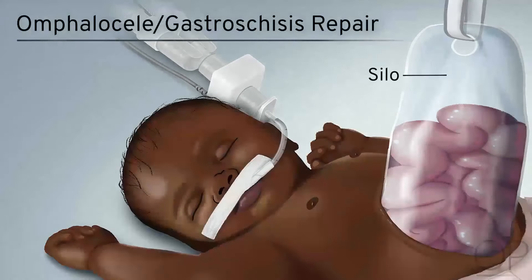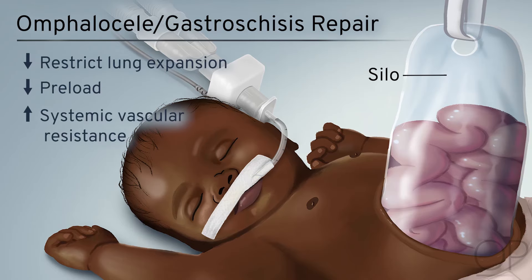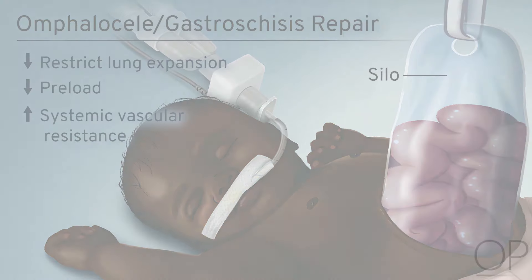The process of using a silo to position the intestinal contents in the abdomen can, similarly to abdominal insufflation or large omphaloceles, restrict lung expansion, decrease preload, and increase systemic vascular resistance.